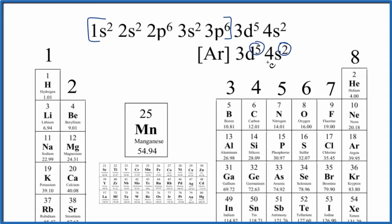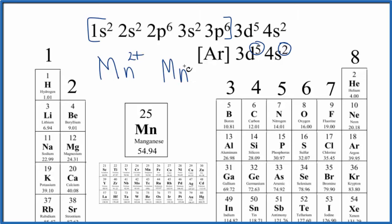That doesn't mean that manganese is going to use all of these valence electrons when it forms chemical bonds. Typically manganese will lose 2 to become Mn2+ or lose 4 to become Mn4+. So it doesn't necessarily use all of the valence electrons, but it does have 7 valence electrons.